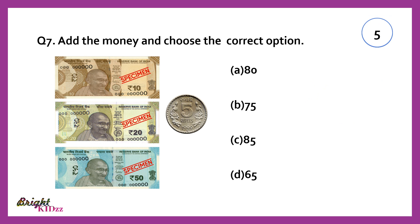Add the money and choose the correct option. Answer: 85. 50 plus 20 is 70, plus 10 is 80, plus 5 is 85.